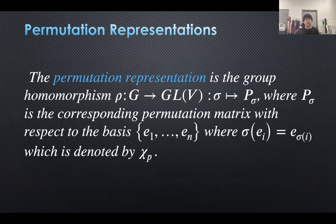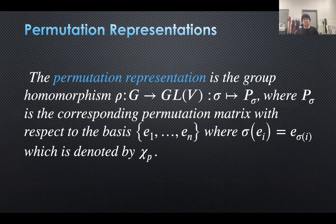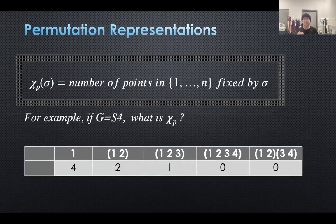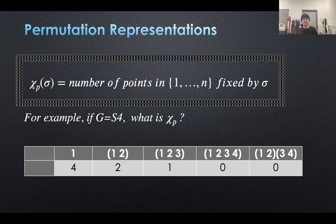In order to compute the character table of a finite group, it is often useful to construct new representations and compute their characters. One classical construction is permutation representations. Since we are working in symmetric groups, every element of the group is a permutation. The permutation representation sends every permutation to its corresponding permutation matrix, and is usually denoted by chi P. Computing its character is very simple: chi P of sigma is the number of points in 1 to n fixed by sigma.